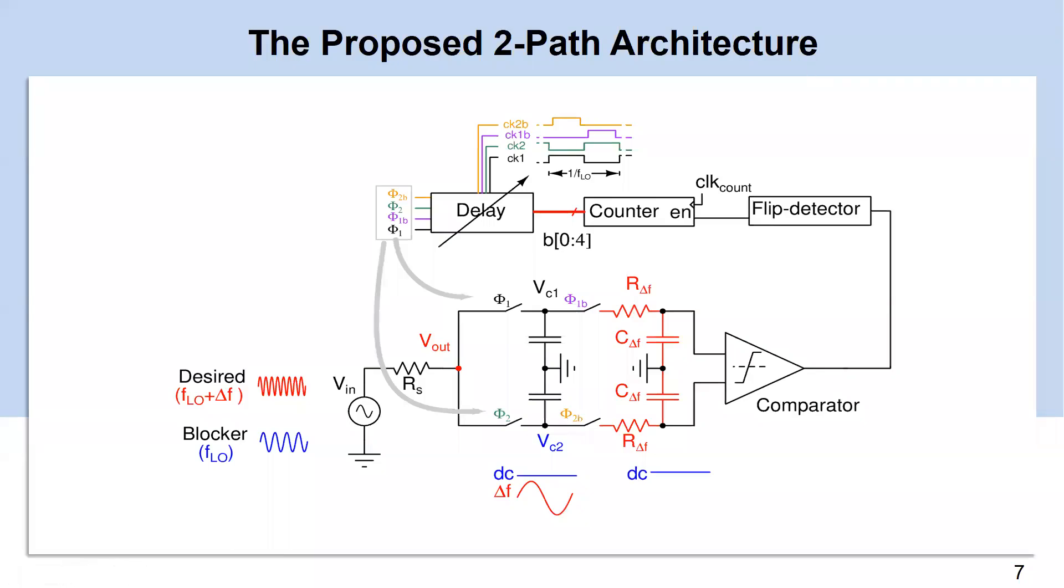Now let's assume receiver contains both desired signal and blocker. The two-path architecture allows desired signal to pass due to inherent property of n-path filter. The desired signal is down-converted to delta f since this is a time-varying signal at intermediate frequency.